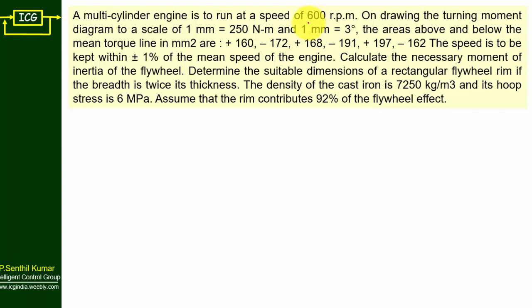A multi-cylinder engine is to run at a speed of 600 RPM. Drawing the turning moment diagram with scale 1 mm = 250 Newton-meter and 1 mm = 3 degrees, the areas above and below the mean torque line in mm² are: 150, 72, 168, 191, 197, and 162. This is the turning moment diagram of a steam engine. The speed is to be varied within plus or minus 1 percentage of mean speed.